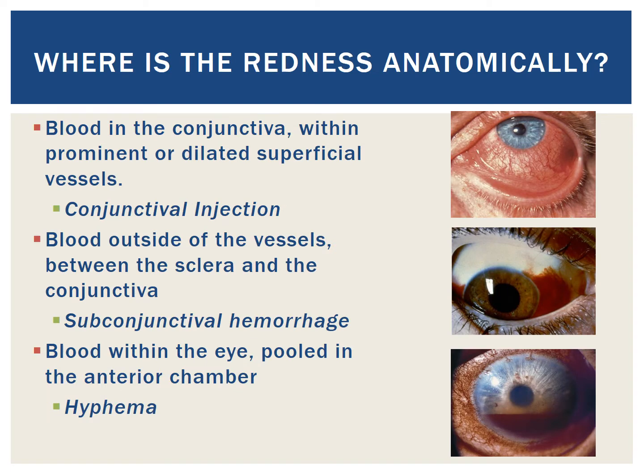Determination of the anatomic location of blood in a red eye is one of the first branch points in forming your differential diagnosis. In the top image, you can see that blood is in the conjunctiva within prominent or dilated superficial vessels — this is a good example of conjunctival injection. In the middle image, the blood is outside of the conjunctival vessels and between the sclera and the conjunctiva — this is an example of subconjunctival hemorrhage. In the bottom image, the blood is within the eye and pooled in the anterior chamber — this is an example of hyphema.